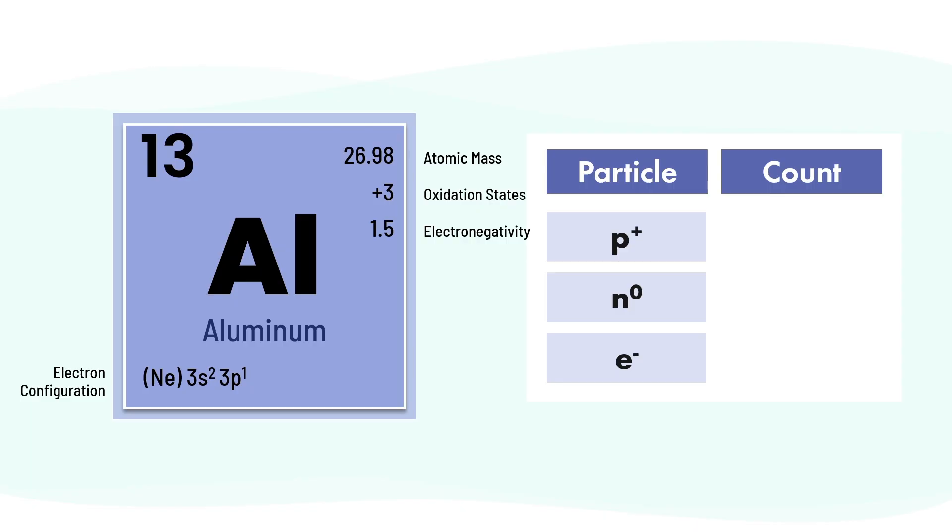First, the atomic number is 13, so aluminum has 13 protons. And since this is a neutral atom, it also has 13 electrons.